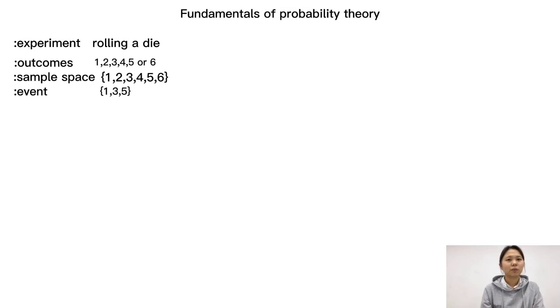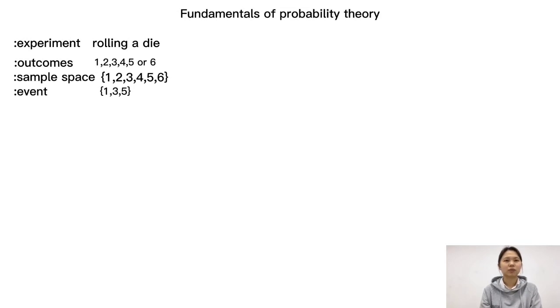The set of all possible outcomes of an experiment is called the sample space. For the experiment of rolling a die once, the sample space is the set {1, 2, 3, 4, 5, 6}.